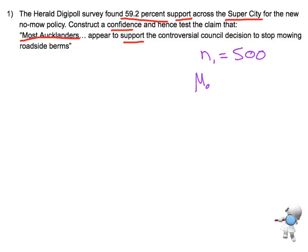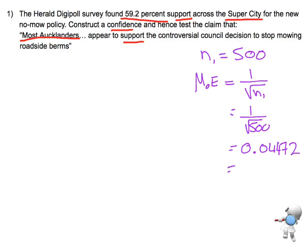My margin of error is 1 over the square root of n, which in this case is 1 over the square root of 500. Putting that into my calculator, I get 0.04472. I need to turn that into a percentage, so I multiply by 100 and that gives me 4.47%, rounding to two decimal places. If doing it as a decimal, I'd use at least four or five decimal places: 0.0447.